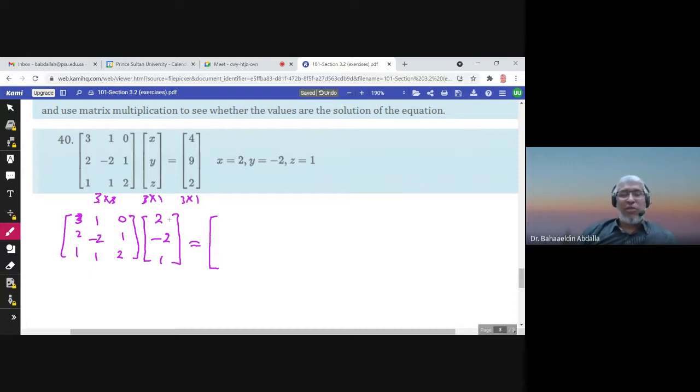3 times 2, 6 minus 2, that's 4, because 0 times 1 is 0. 2 times 2, 4, plus 4, 8, plus 1, that's 9. 1 times 2, 2 minus 2, that's 0, plus 2, that's 2. So in fact, we have the matrix to the right. So yes, the values are solutions of this equation. This is a matrix equation, an equation of matrices.